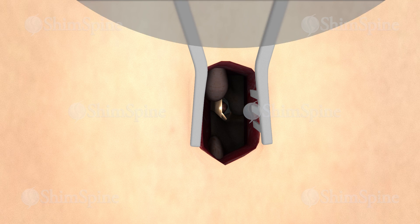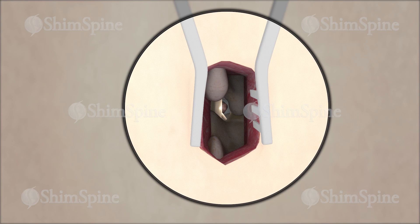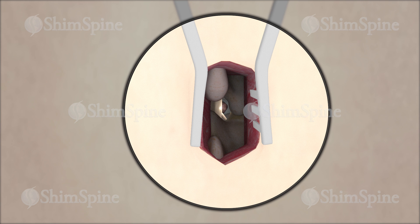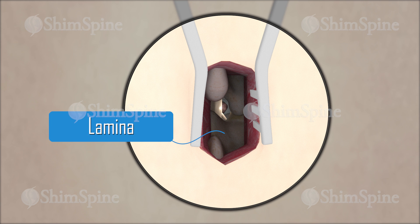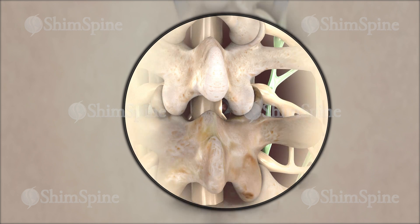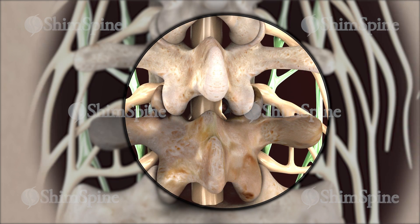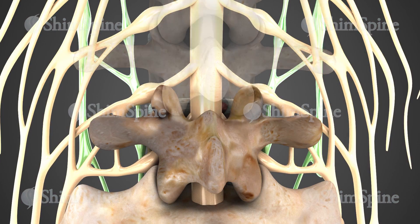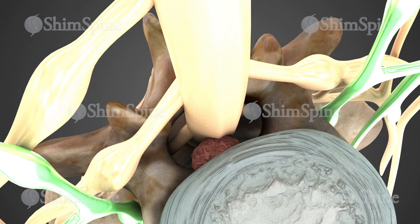Muscles are gently retracted to allow visualization of the bony covering or lamina and the ligaments that cover over the spinal canal. Magnification is used to better visualize the anatomy — thus, micro.